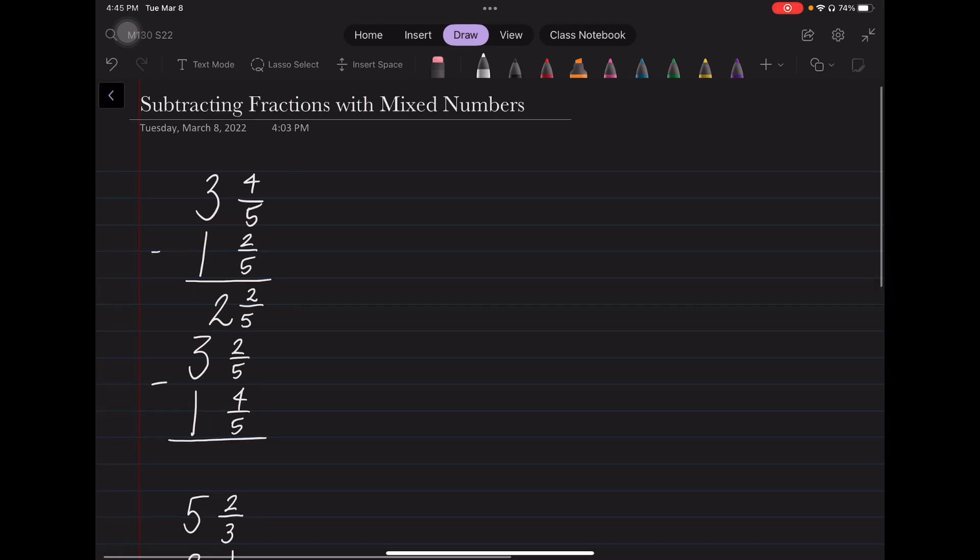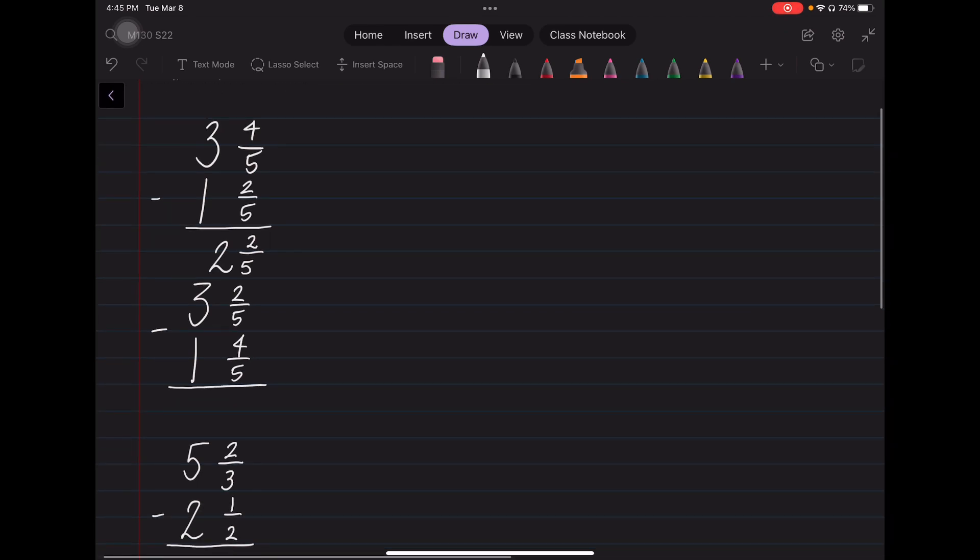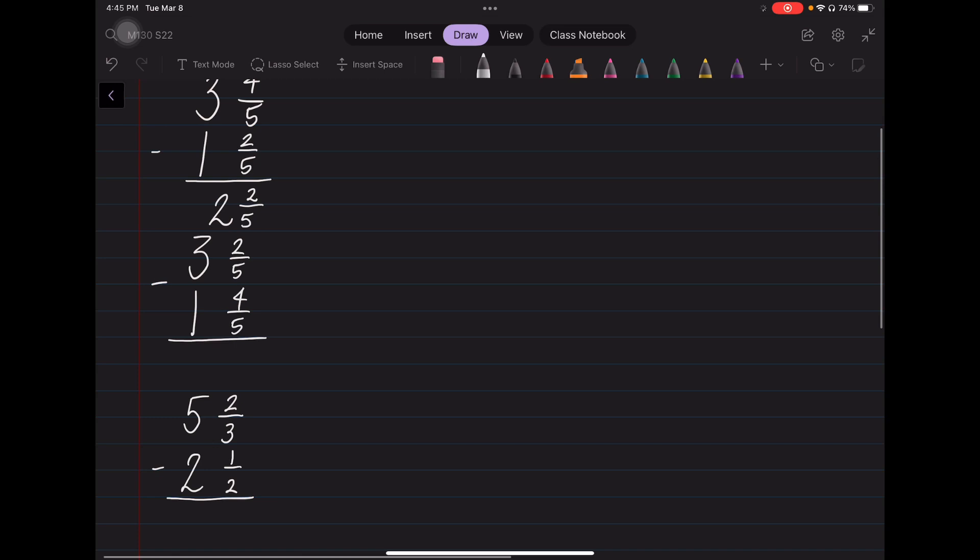Now, I reverse the fractions in the second one, where I have 2 fifths minus 4 fifths. Keeping that denominator of 5, I can't do 2 minus 4, because then I get a negative. And that's not really how fractions work. I need more. And what that means is, I need more of this. 5 fifths. So I borrow from that 3, and it becomes a 2, which everybody's good with.